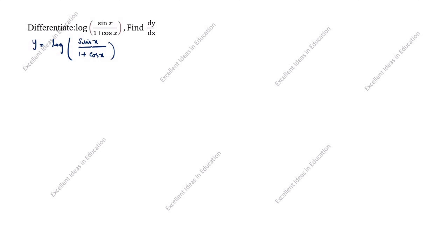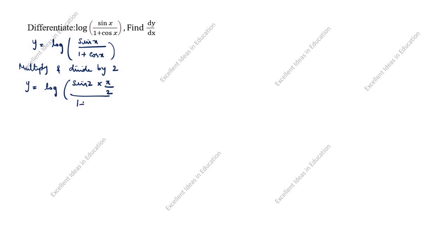First, what we will do in this case is multiply and divide by 2. So y is equal to log of (sin 2 into x by 2, divided by 1 plus cos 2 into x by 2). Here the 2 and 2 cancel to give sin x in the numerator, and in the denominator 1 plus cos 2 into x by 2, where the 2 and 2 cancel to give 1 plus cos x.